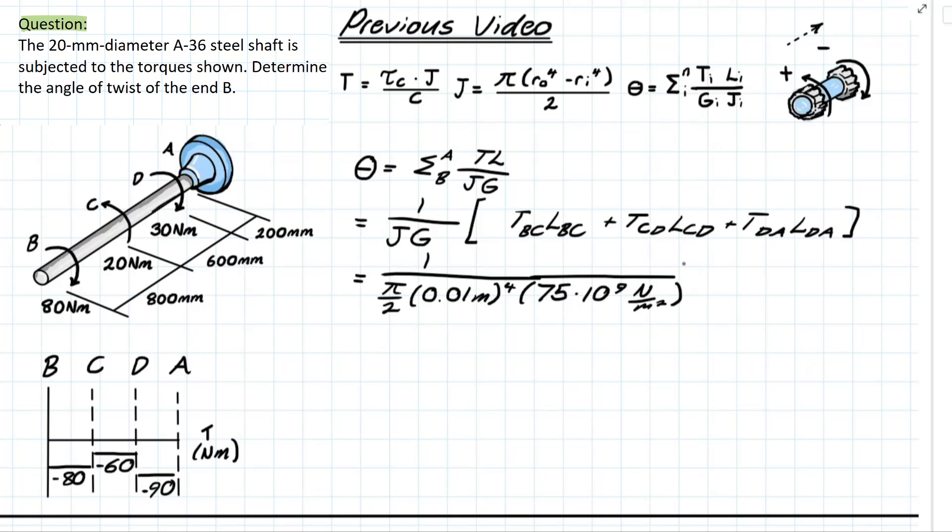Next we have the terms that are being multiplied by this and it's very simple the torque at BC is written on this table right here so we have negative 80 and we are going to be multiplying this by the length which is once again given in millimeters so we have to convert that to meters